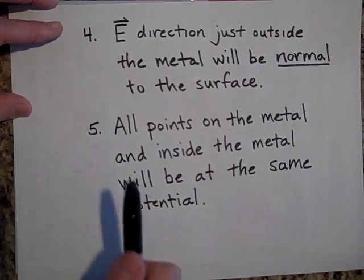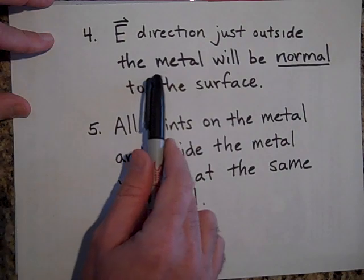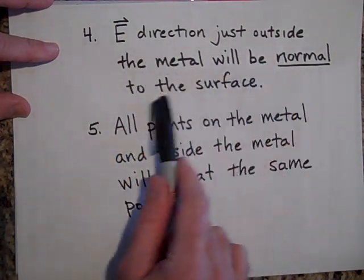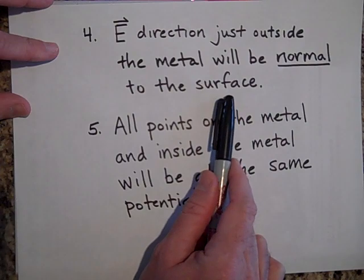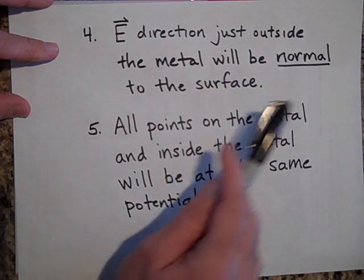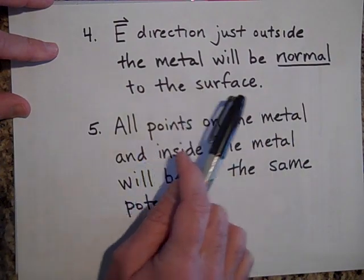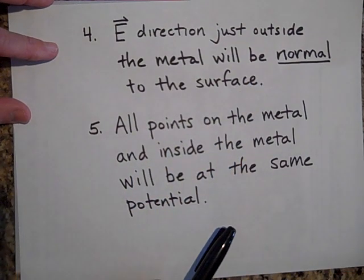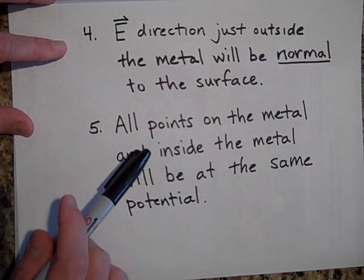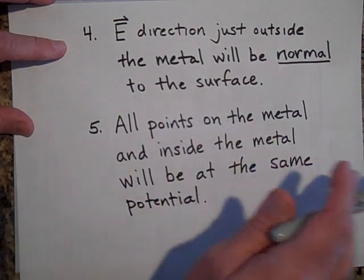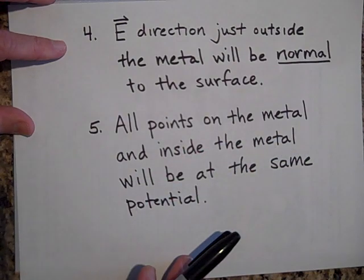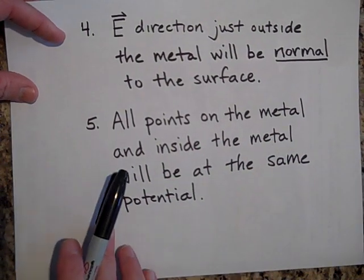Number four: the direction of the electric field just outside the metal will be normal to the surface. The electric field lines always leave perpendicular to the surface. They can curve later on, but when they're just leaving the surface, they're going to be perpendicular to it.